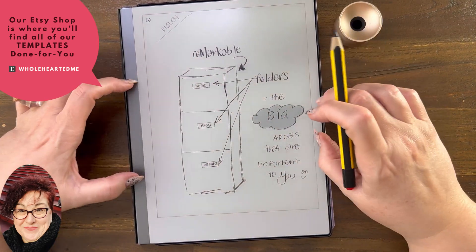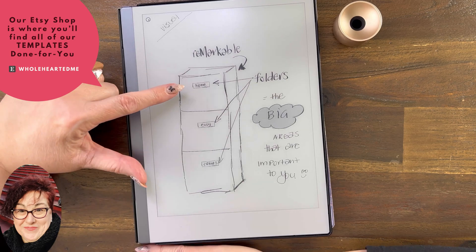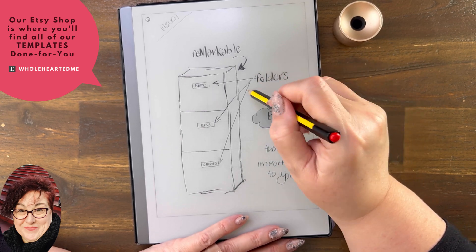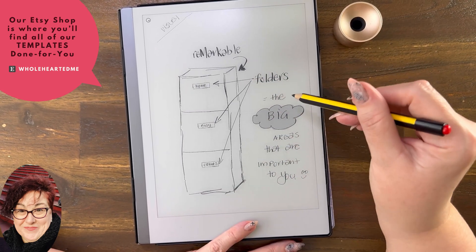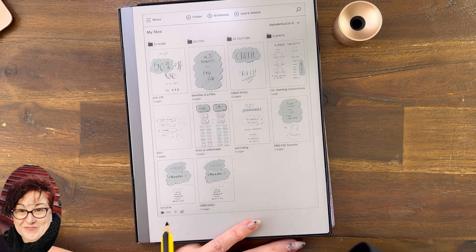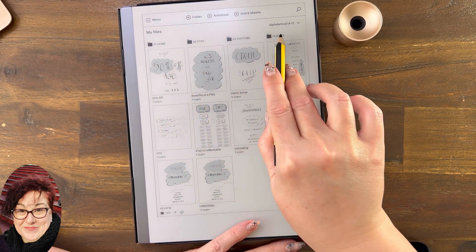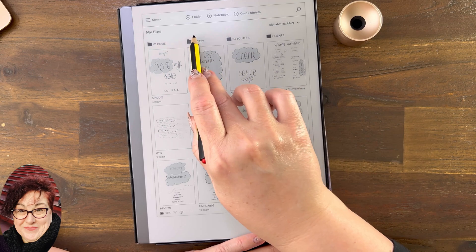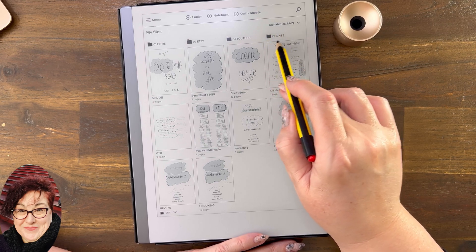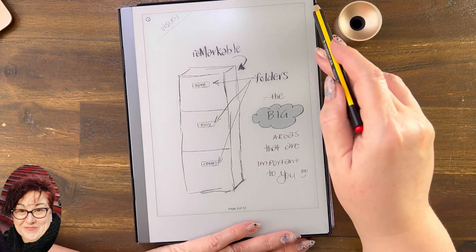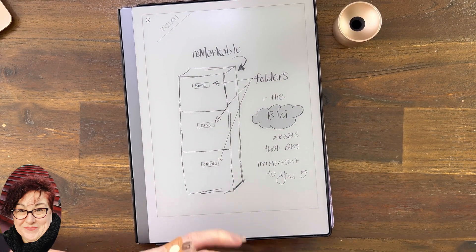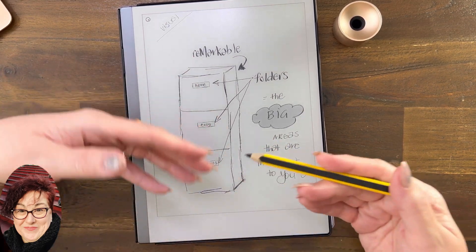This is the hardware, and inside there's obviously some software. What we're going to talk about is your main folder structure — your top-level folders — which I'll give you an example of in a minute. These are the big areas that are important to you. If I close this document, these are my drawers: Home, Etsy, YouTube, and Clients. These are your top-level folders, and then you're really just going to layer folders within folders within folders, and then we'll get to the files.